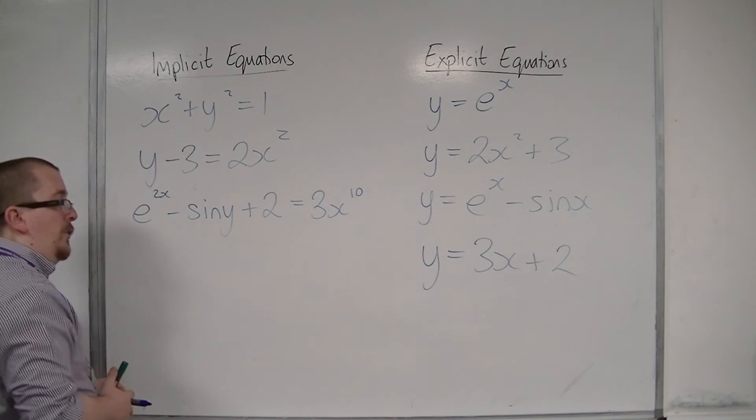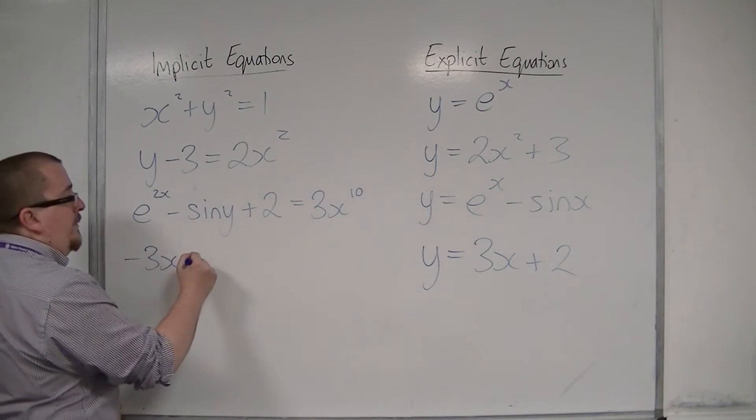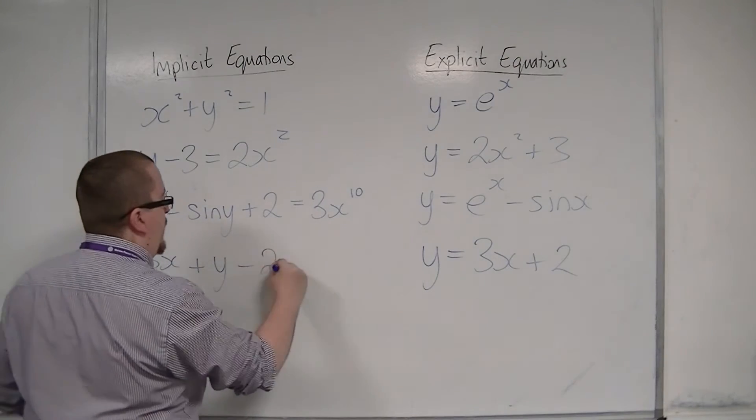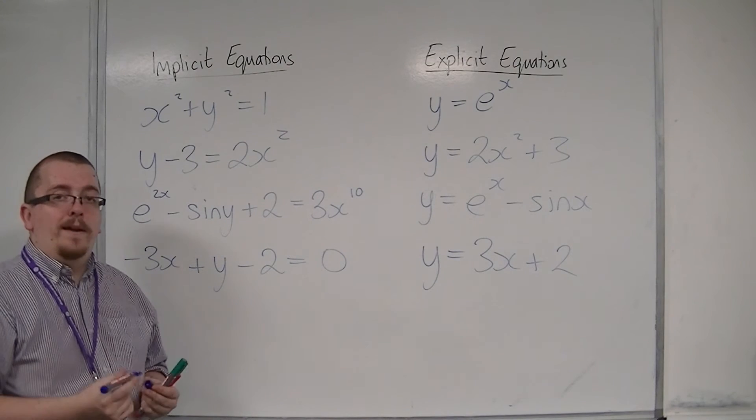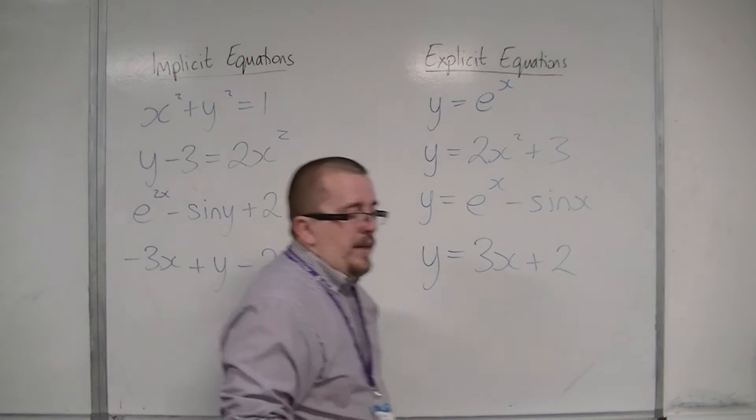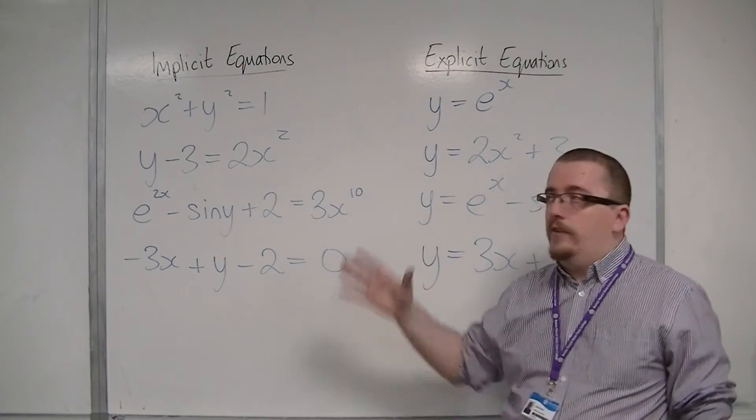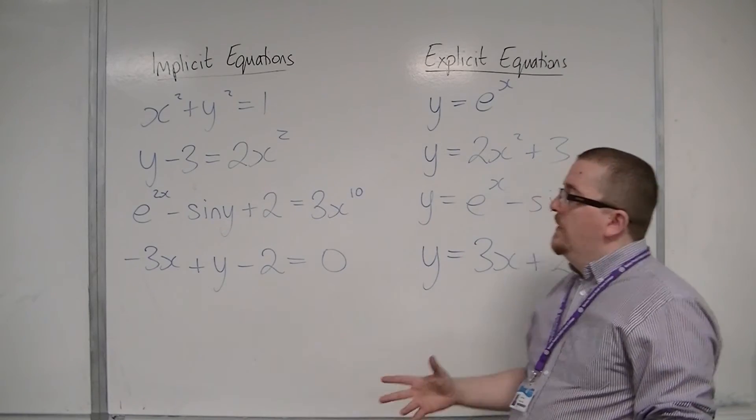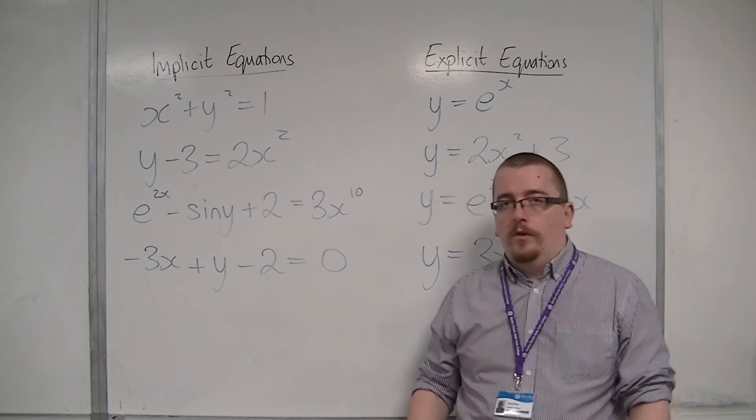y = 3x + 2, I could write that as -3x + y - 2 = 0, and I've written it in an implicit way. So this whole section is going to be about figuring out a way of differentiating things like this. And by the end of this section, you'll be able to differentiate all of these things.